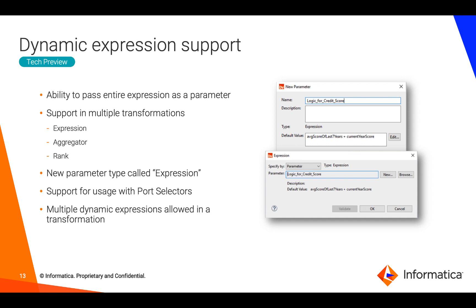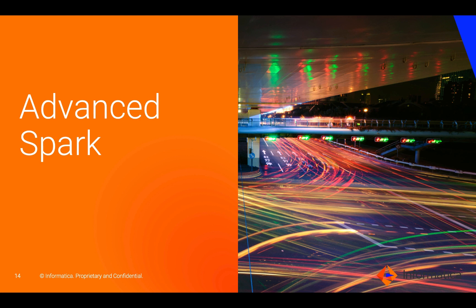The dynamic expression support, a tech preview feature introduced in 10.2, now allows you to parameterize an entire expression for a given port in the Expression, Aggregator, or Rank transformations. You can not only pass values into your mappings but pass the logic itself to be processed as part of these transformations. A new parameter type called 'expression' is introduced — just create a new parameter and use it like any other parameter in these transformations, and you can pass the logic or code at runtime.